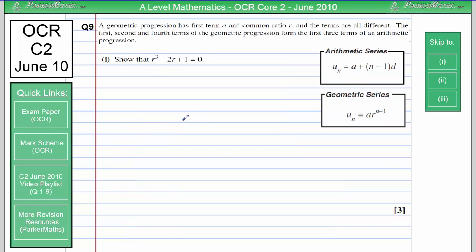Question 9. A geometric progression has first term A and common ratio R, and the terms are all different. The first, second and fourth terms of the geometric progression form the first three terms of an arithmetic progression. In part 1, it says show that R cubed minus 2R plus 1 equals 0.